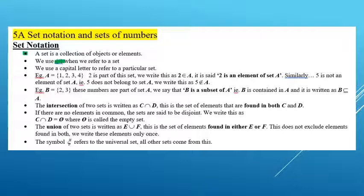For example, A is the set of numbers which contains 1, 2, 3, and 4 only. When we write the numbers separated by commas like this, that means they're the only numbers that belong in that set. So the set A contains the numbers 1, 2, 3, and 4.